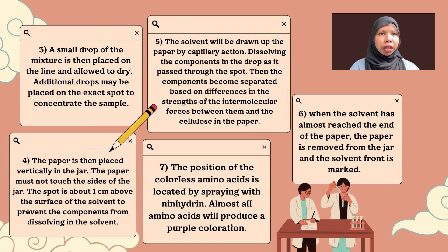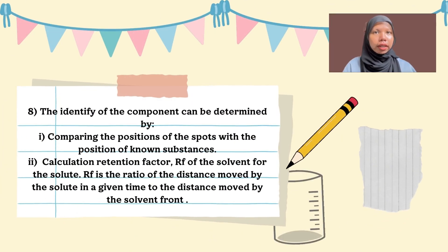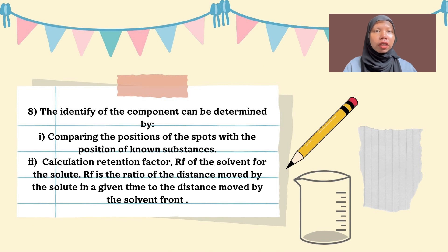The solvent is drawn up the paper by capillary action, dissolving the components as it passes through the spot. The components become separated based on differences in intermolecular forces between them and the solutes in the paper. When the solvent has almost reached the end of the paper, the paper is removed and the solvent front is marked. The position of colorless amino acids is located by spraying with ninhydrin — almost all amino acids will produce a purple coloration. The identity of each component can be determined by comparing spot positions or by calculating the retention factor (Rf), which is the ratio of the distance moved by the solute to the distance moved by the solvent front.